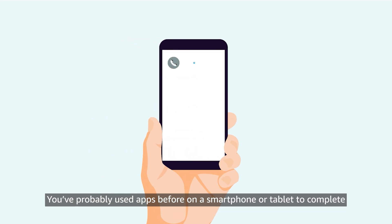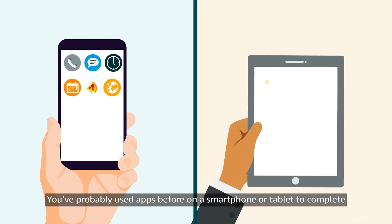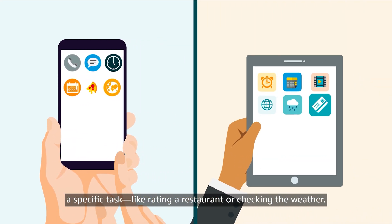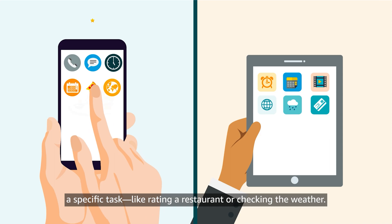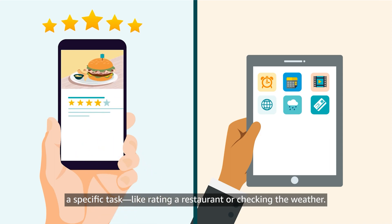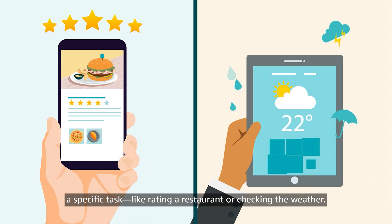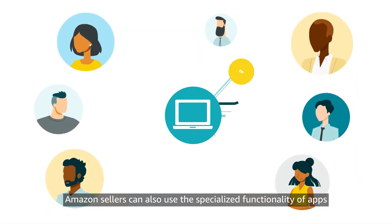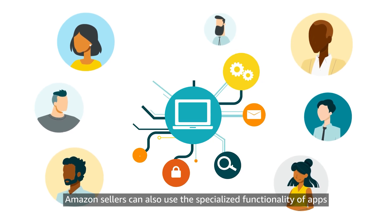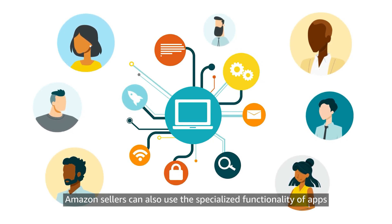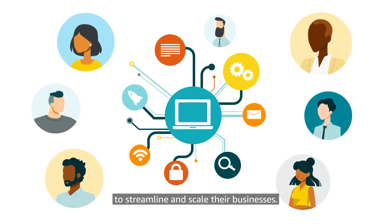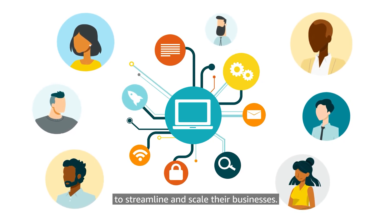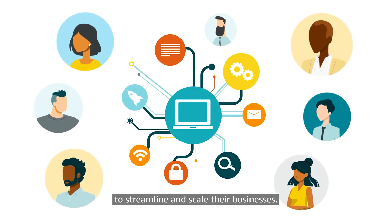You've probably used apps before on a smartphone or tablet to complete a specific task, like rating a restaurant or checking the weather. Amazon sellers can also use the specialized functionality of apps to streamline and scale their businesses.